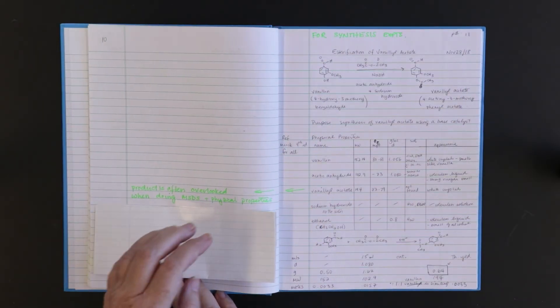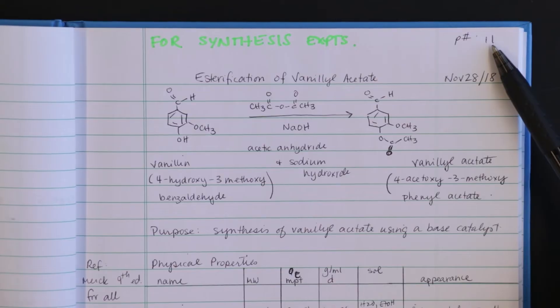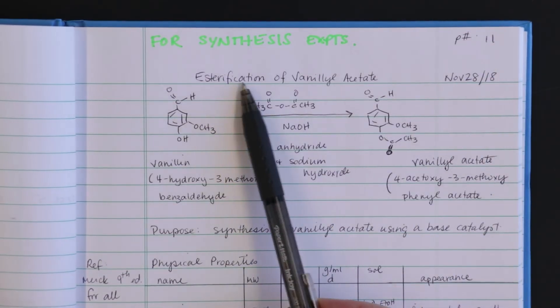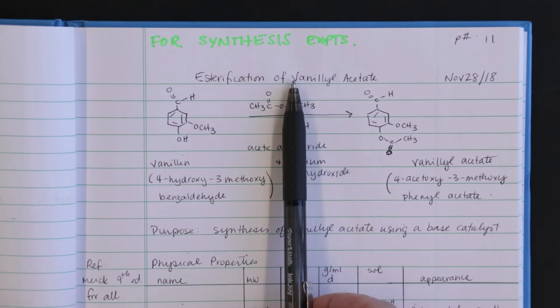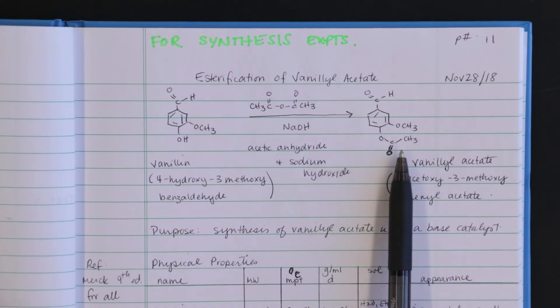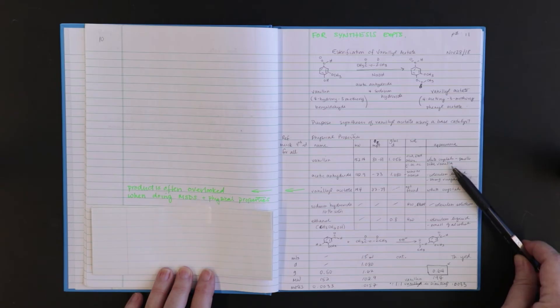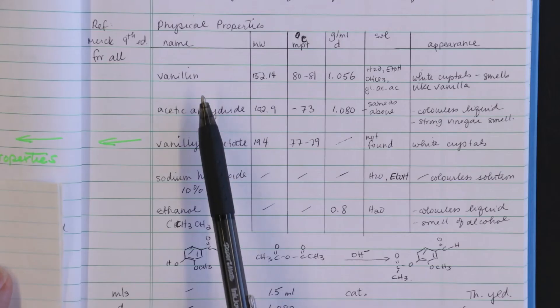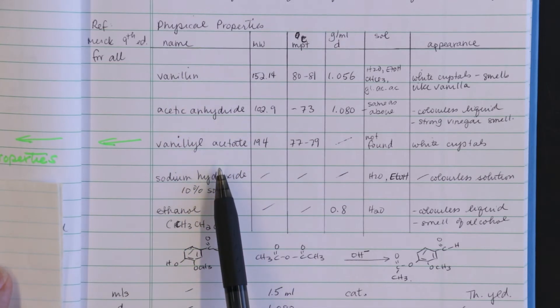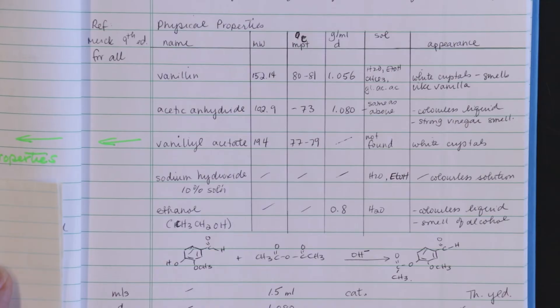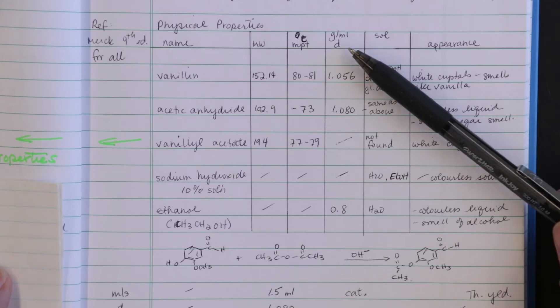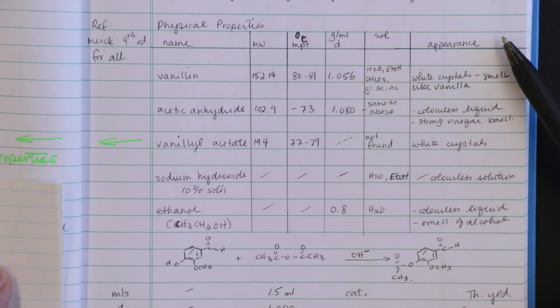For synthesis experiments such as you will see in organic chemistry you will need of course the page number, the date, the title, and now I show my reactants, reagents, and product. This is the reaction equation. I would have done my hazards table on the left page as expected. Here I have my physical properties table showing all the reagents being used. I could have typed it and glued it to the page. It is important to always include the product as often students forget about this. Molecular weights, melting points, density, solubility, and appearance are important.